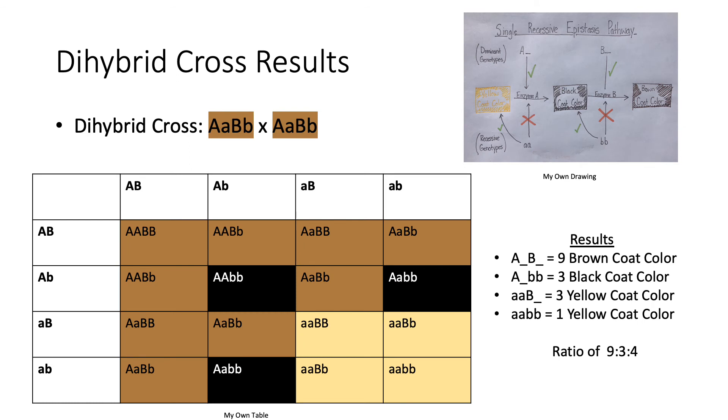Now that we understand this pathway, we will use it to determine the genotypes and phenotypes of the offspring produced from a dihybrid cross, meaning the offspring from two individuals that are heterozygous at each loci, resulting in a brown coat color phenotype for both parents.